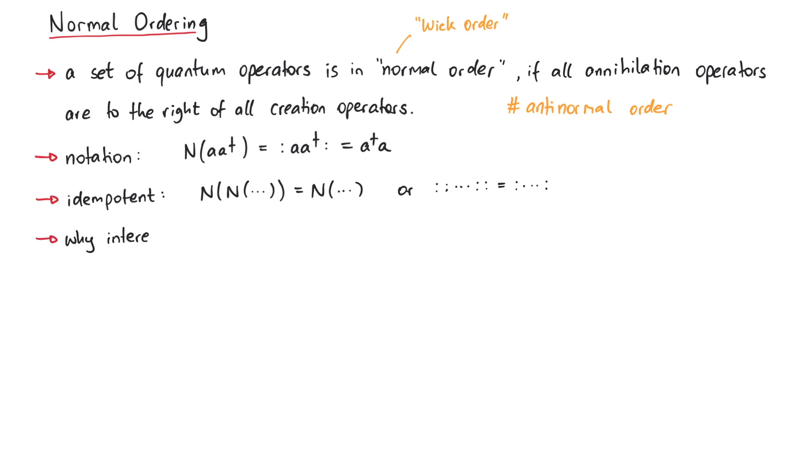Now why is normal ordering interesting? If we take the vacuum expectation value of a normal ordered set of quantum operators, it will yield zero. This is because on the far right of the expression, we will have an annihilation operator, and on the far left, we will have a creation operator. In contrast, this is not true for ordinary functions, which are unaffected by the normal ordering prescription.